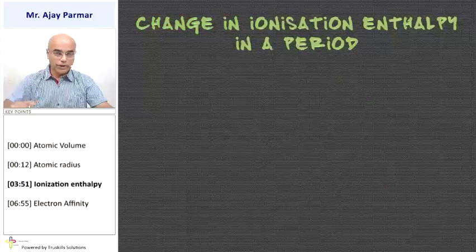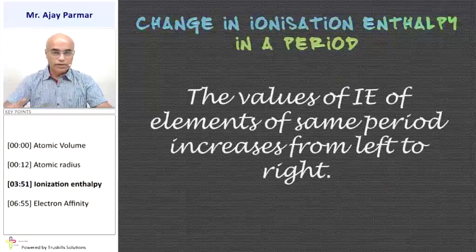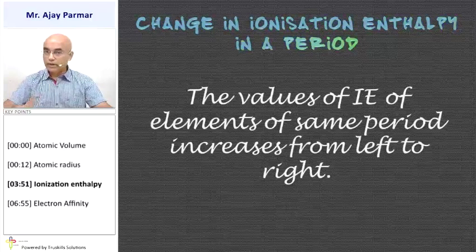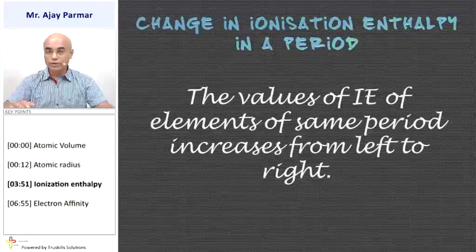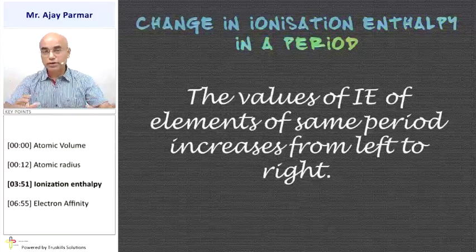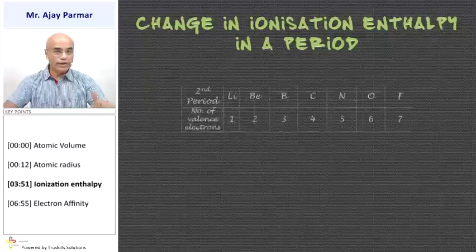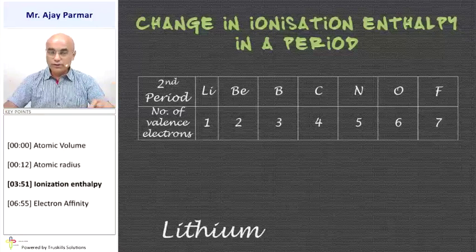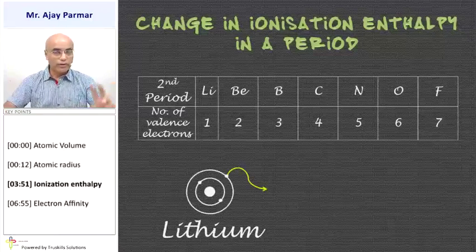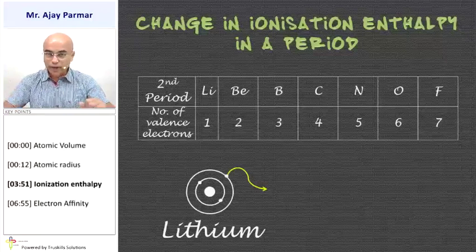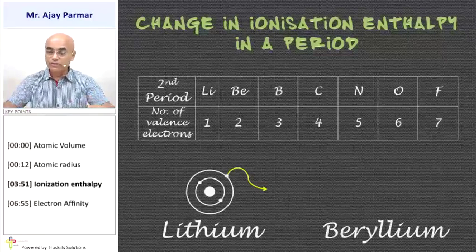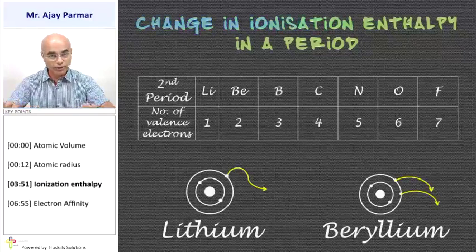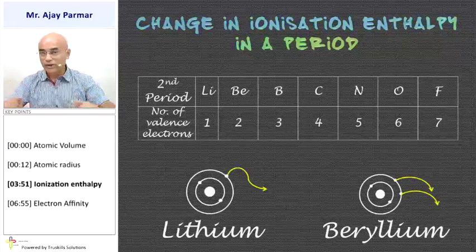How does ionization enthalpy change in a period from left to right? The values of ionization enthalpy are going to increase from left to right. Increase in ionization enthalpy means the capability of losing an electron will be less, so it will require a greater amount of energy to lose the electron of the outermost orbit. Why does this happen? It depends on the same atomic radius. As you can see, in lithium, beryllium, boron, and so on, the number of valence electrons in the outermost orbit is one, two, three, four, and so on. Because the atomic radius decreases in beryllium, the size of the atom decreases, so it can lose those electrons with greater difficulty. That is factor number one, so the ionization enthalpy will be higher.